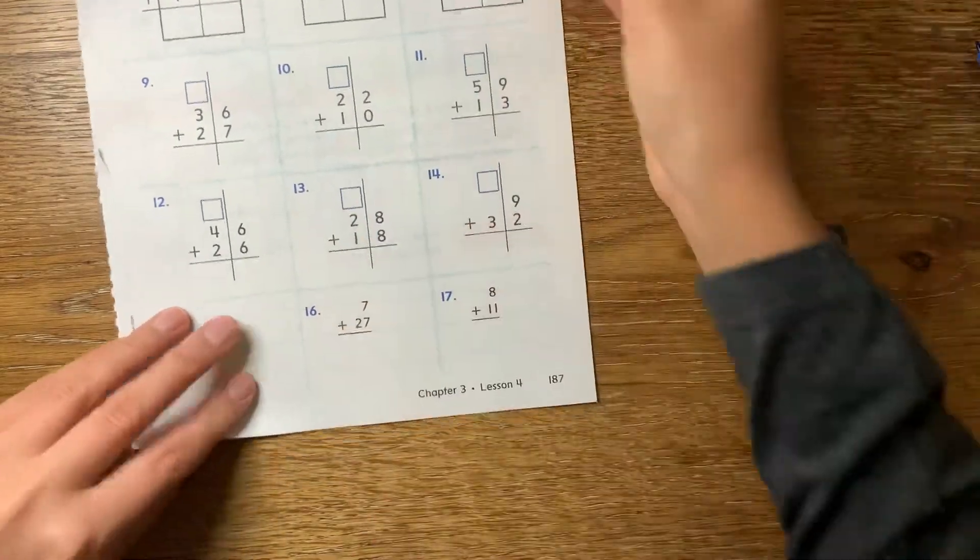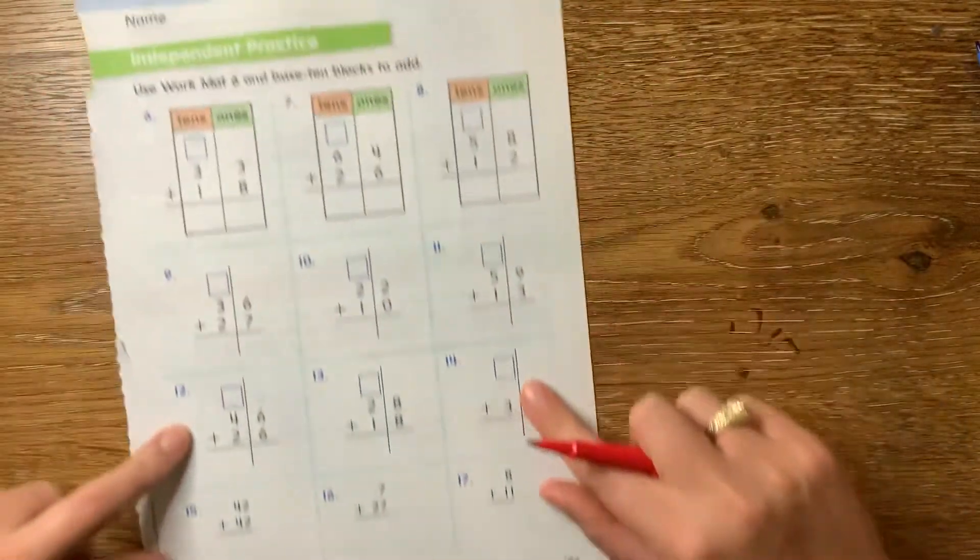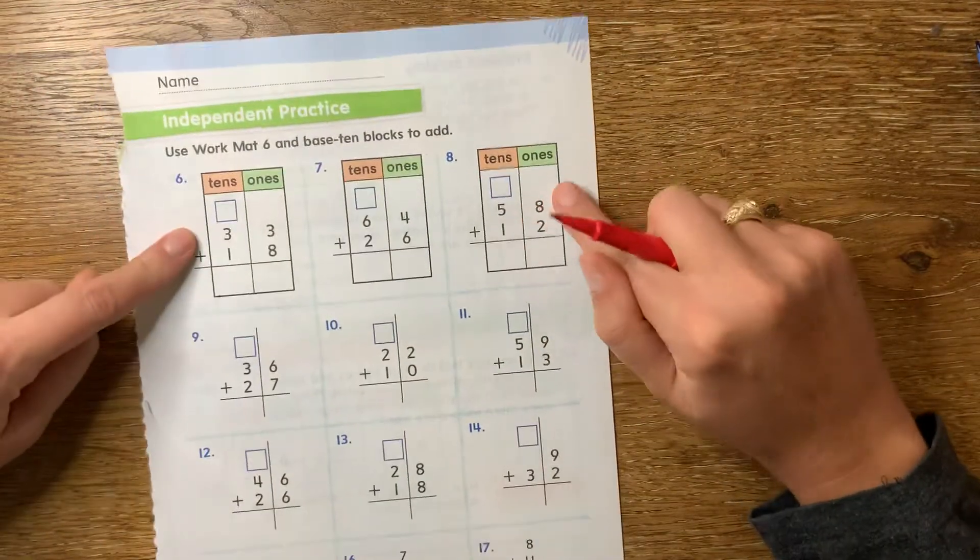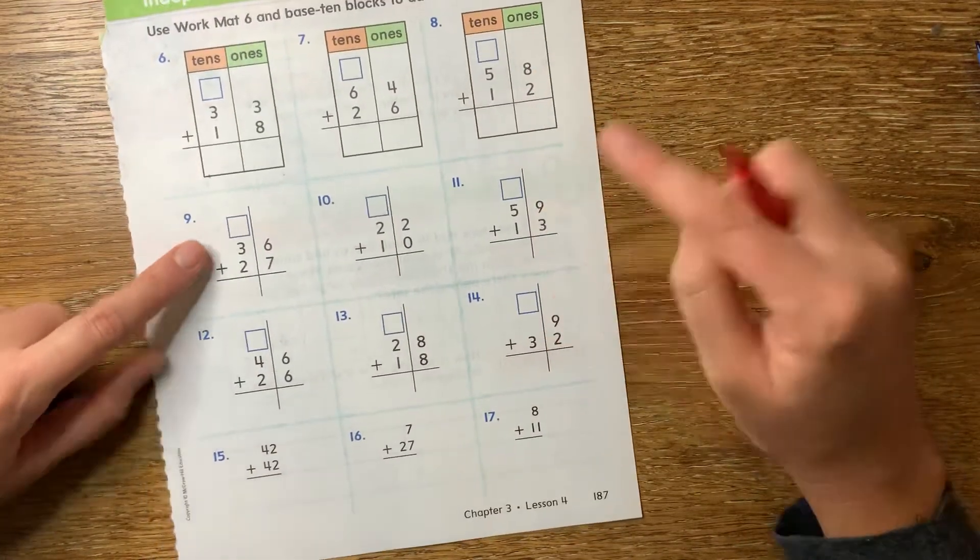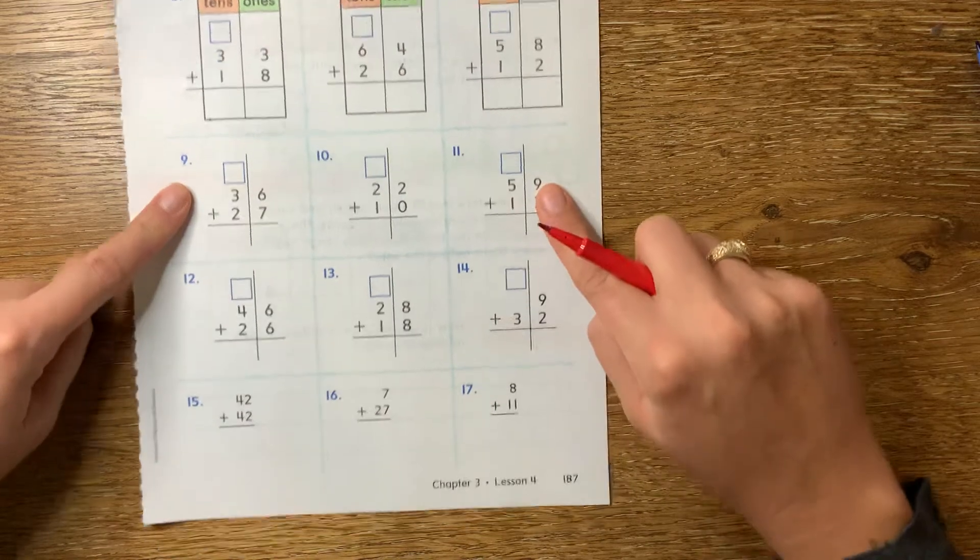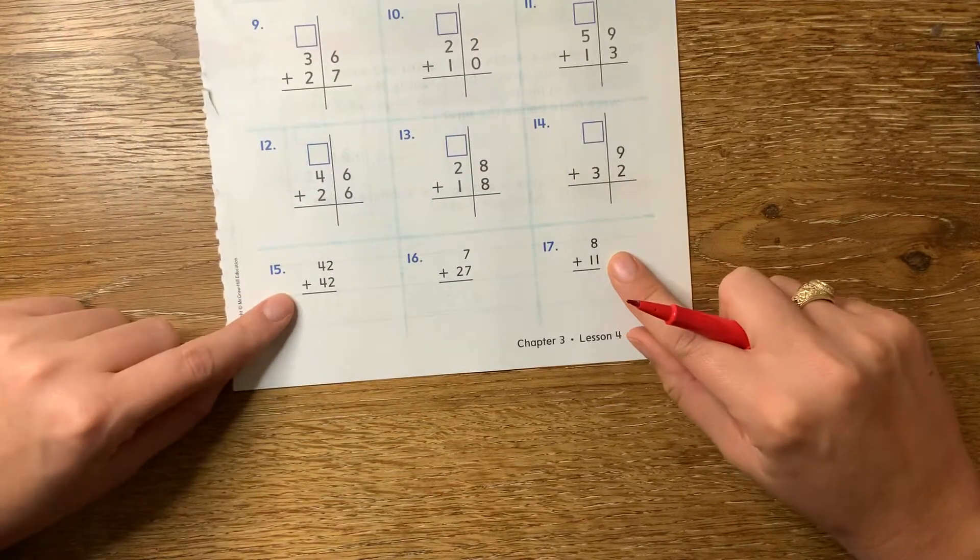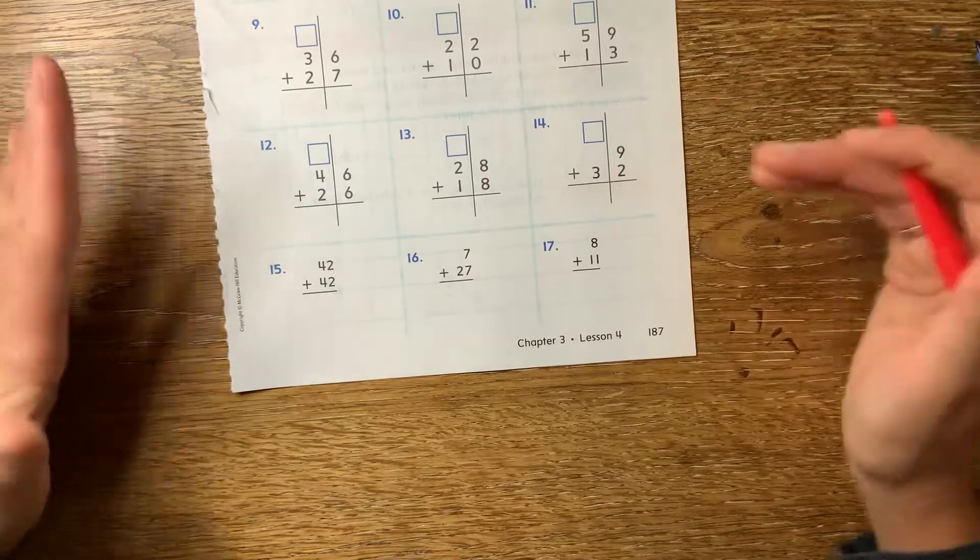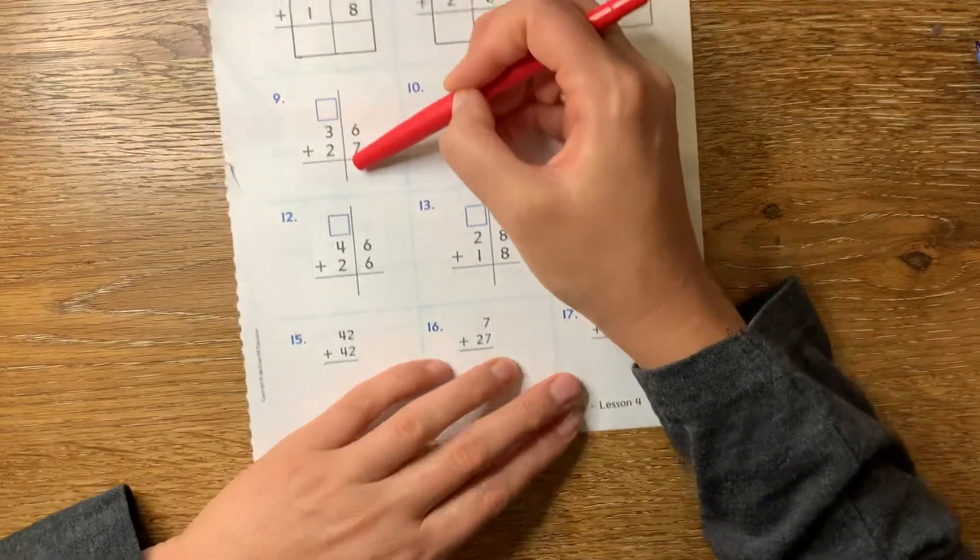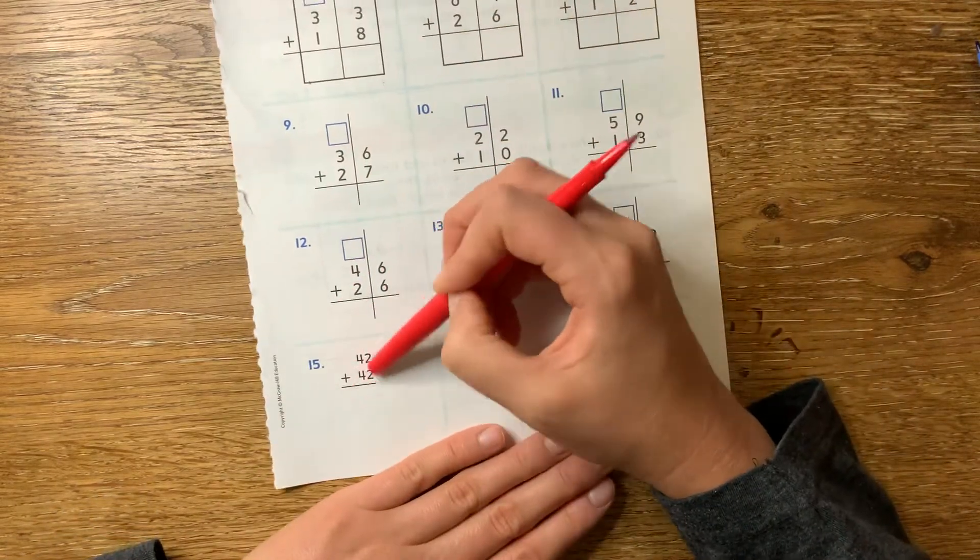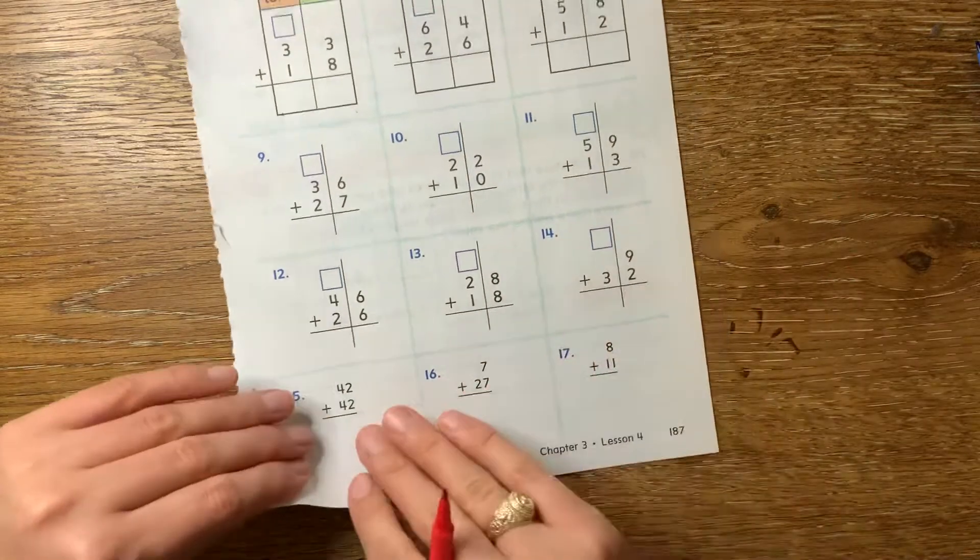All right. So same thing. You're doing the same exact thing. Notice how they come and they gradually take things away from you. Right? So first they still have 10s and ones separated. Then they kind of don't give you where the 10s and ones are, but they still give you the line. Then by the time you get to the bottom, they've taken it all away. Right? So the important thing is that you remember you have to line up 10s and ones. Okay.